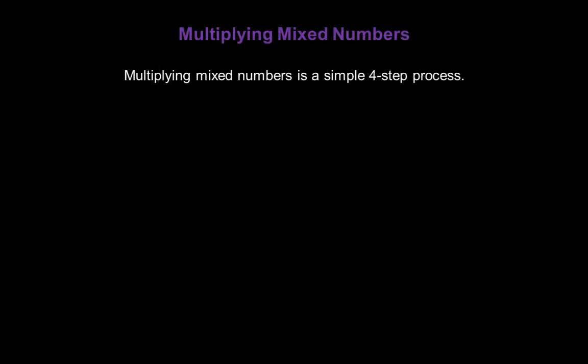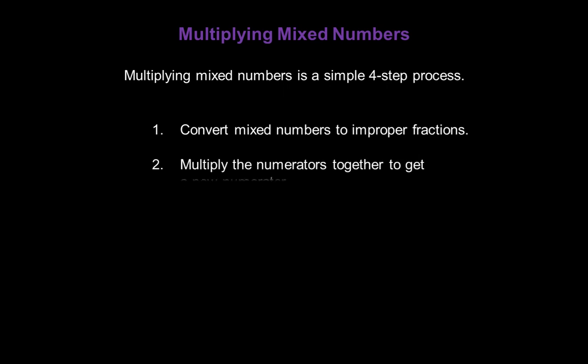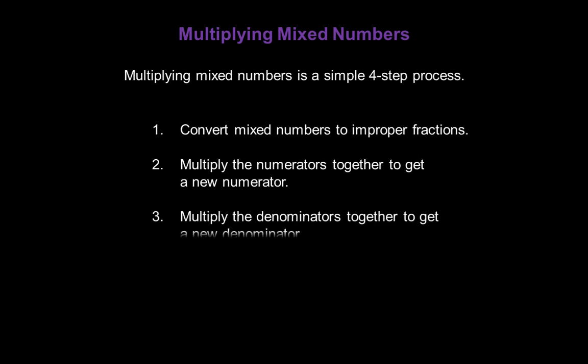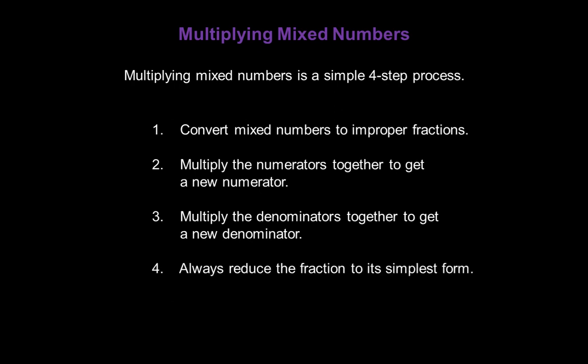Now let's look at multiplying mixed numbers — it's a simple four-step process. Step 1: Convert mixed numbers into improper fractions. Step 2: Multiply the numerators together to get a new numerator. Step 3: Multiply the denominators together to get a new denominator. And Step 4: Always reduce your fractions to their simplest form.